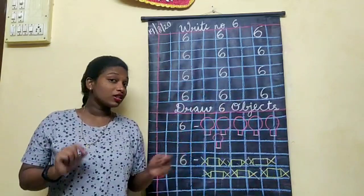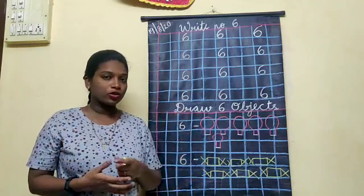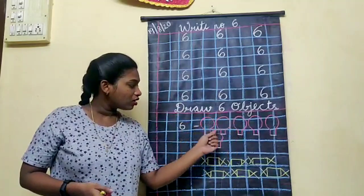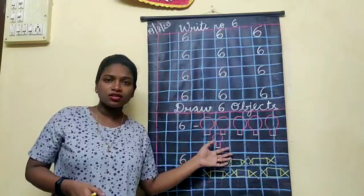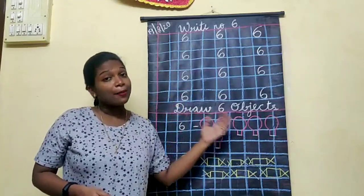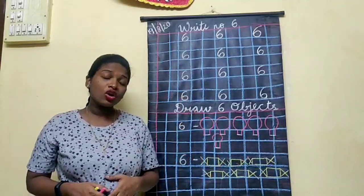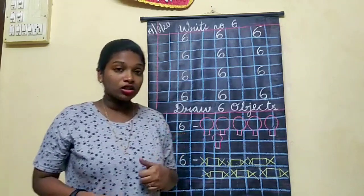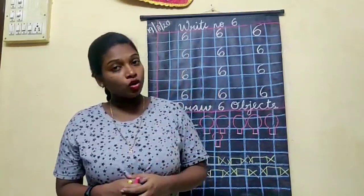You're going to color them. You can draw any other object — six trees, six flowers, six suns, six shoes, six apples, six cherries, six leaves. You can draw whatever you feel, but how many you have to draw? Number six. You're going to write at home two times in your notebook.